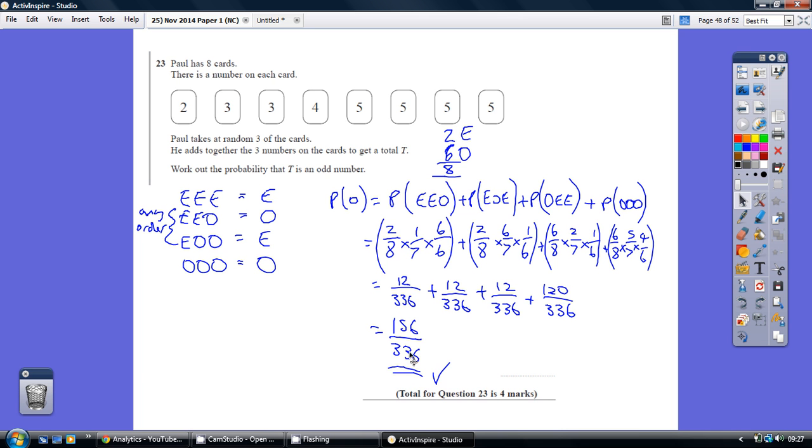Add them together. Twelve plus twelve plus twelve plus 120, that's 156 over 336. You could simplify that down, but you didn't get any credit for doing so. So I've just left it at 156 over 336.